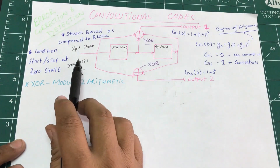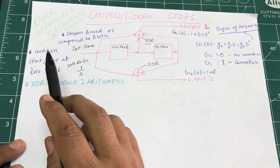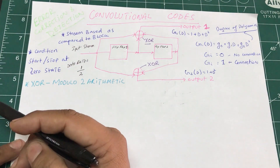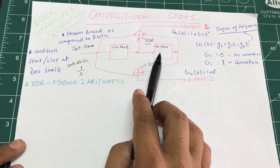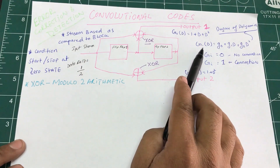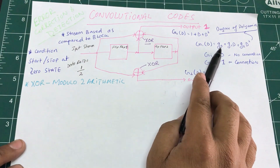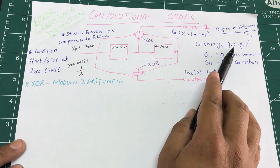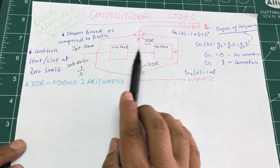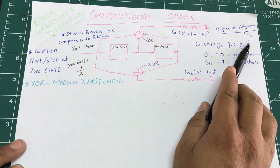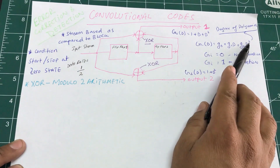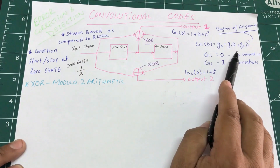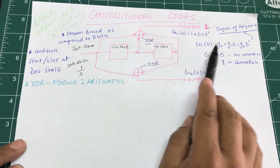The data rate for convolutional codes is normally one-half. What that means is: every time you input a single bit, you get two output bits representing that one bit. So if you're inputting two bits, you get four bits out. The outputs are defined as g1·D + g0, where g0 means no connection — it just represents the input stream — and D represents the flip-flops, with degree one meaning flip-flop one and degree two meaning flip-flop two.